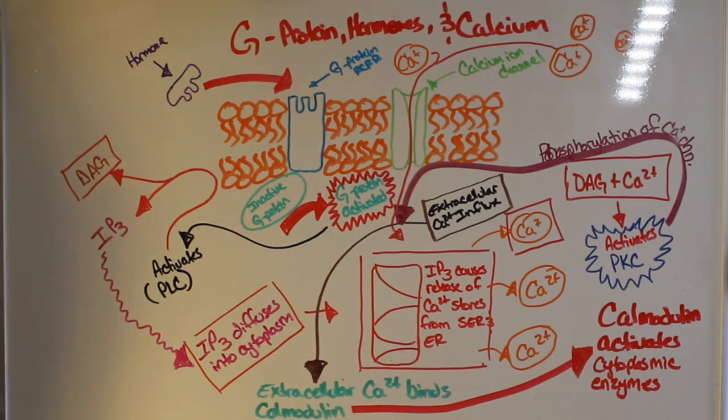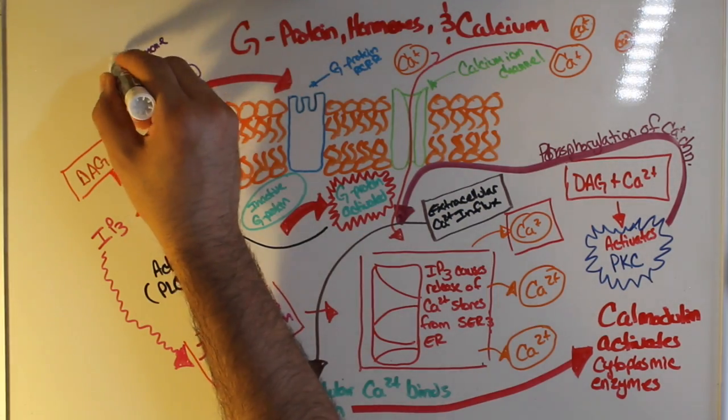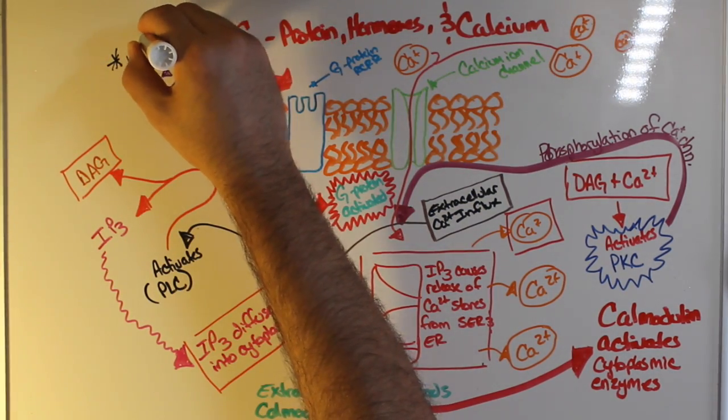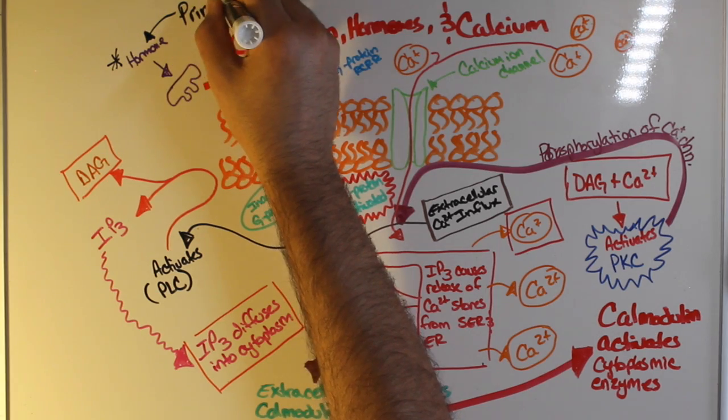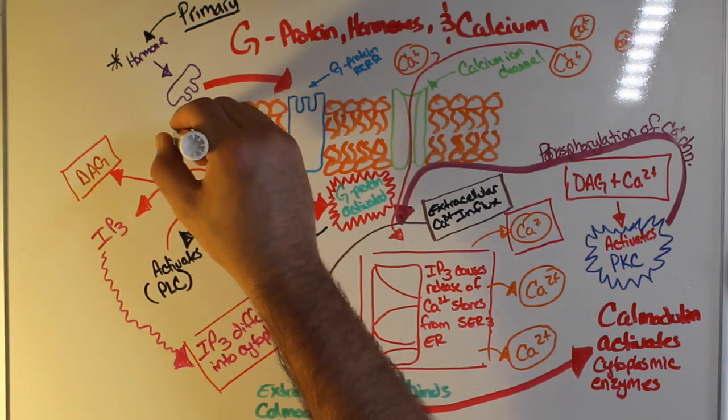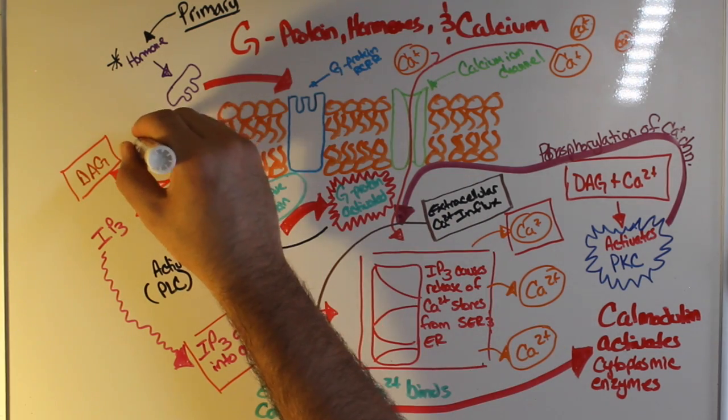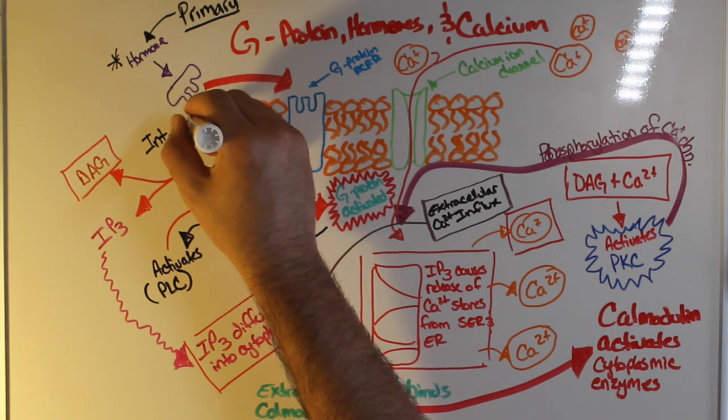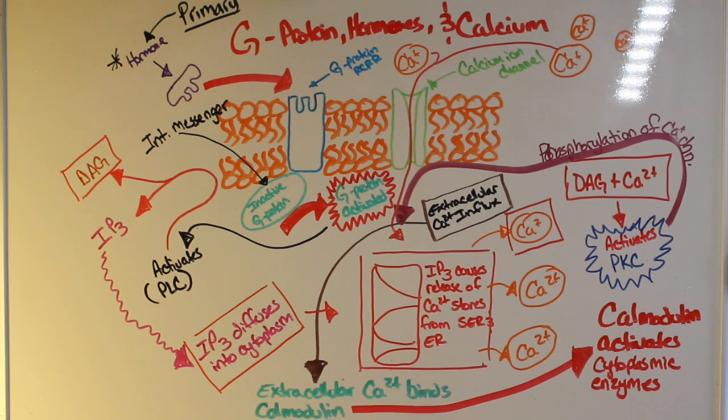Now one thing I want to point out here is where your first intermediate and secondary messengers are. Your hormone that bound to the G protein receptor is your primary messenger. Your intermediate messenger is your G protein. Your secondary messenger, in this case, is calcium.